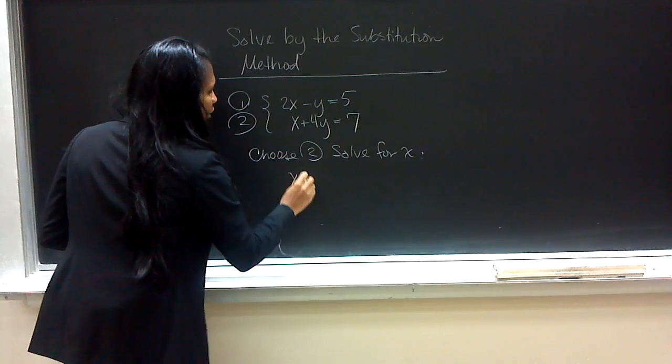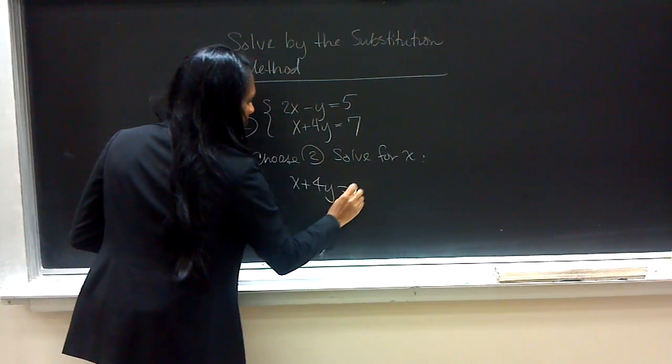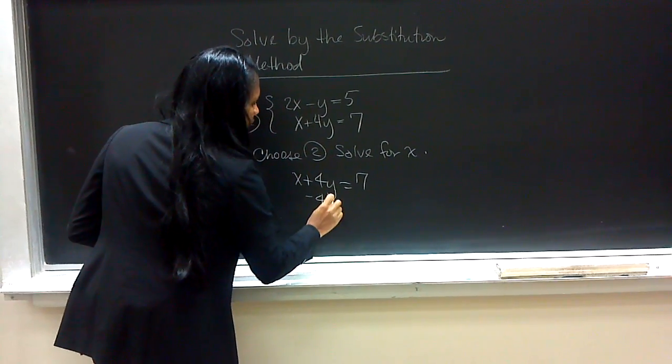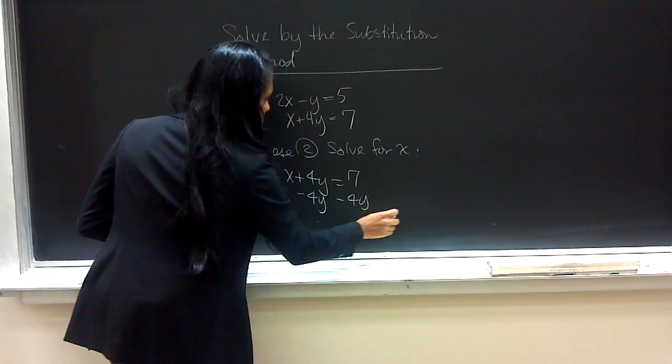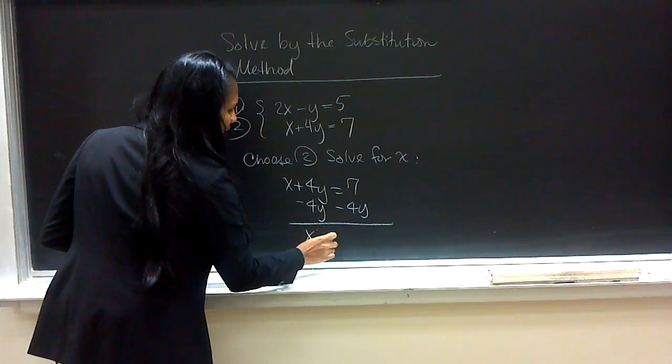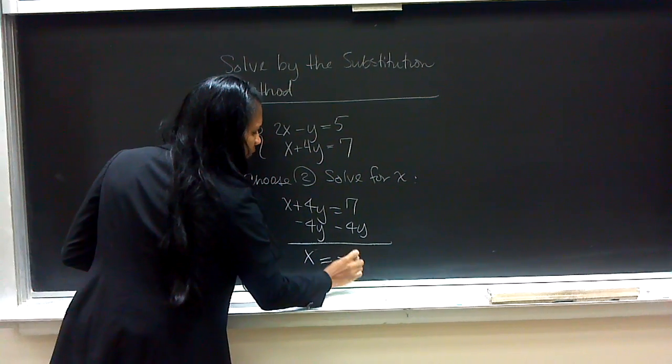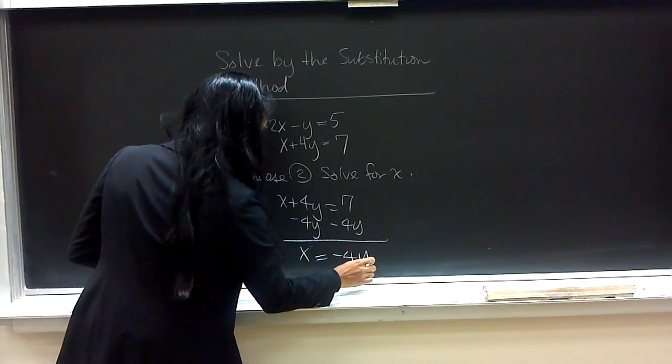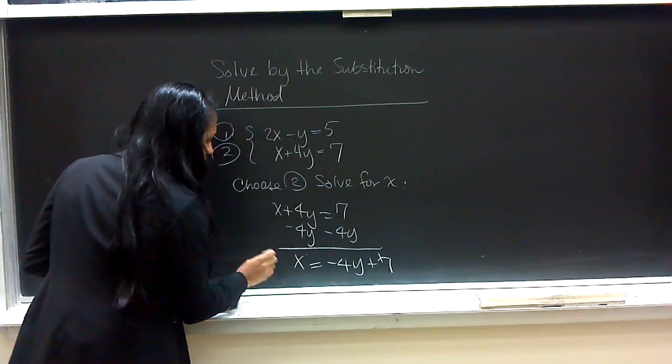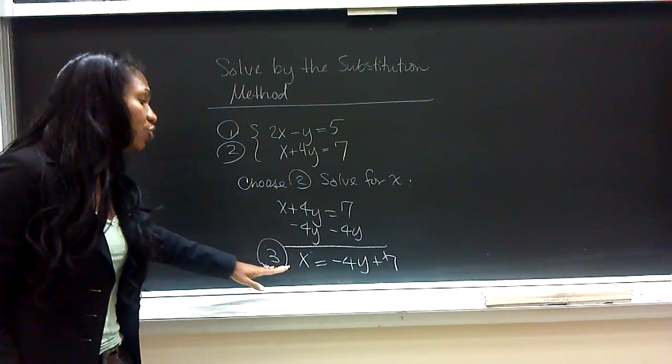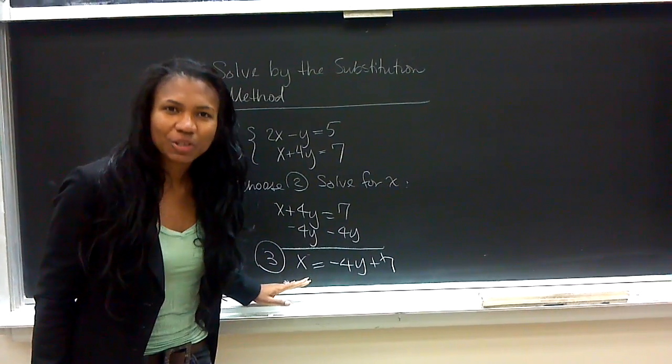So if we take this equation, we subtract 4y from both sides. This becomes x is equal to negative 4y plus 7. We now call this new result equation 3.